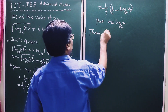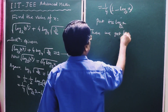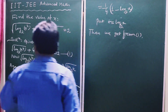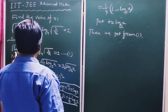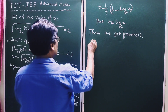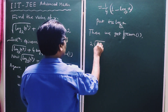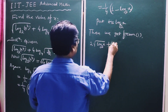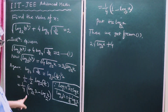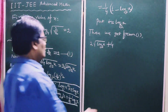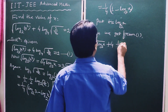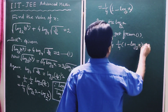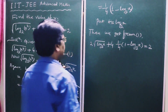Now let t equal log base 2 of x. So the first term becomes 2 times the square root of t, and the second term becomes 4 times one-quarter times (1 minus t), which equals (1 minus t). The full equation is: 2 root t plus (1 minus t) equals 2.